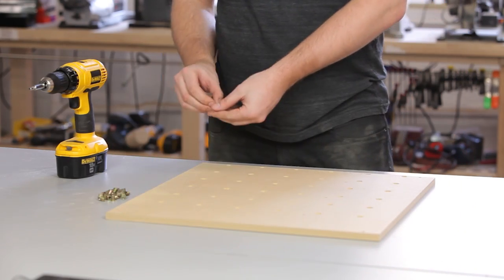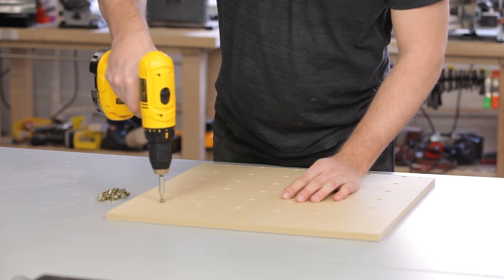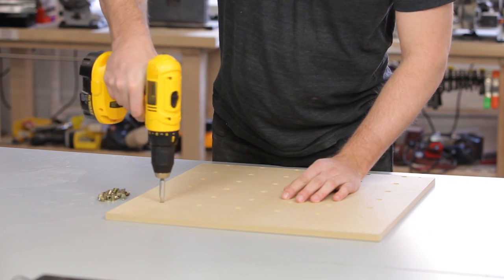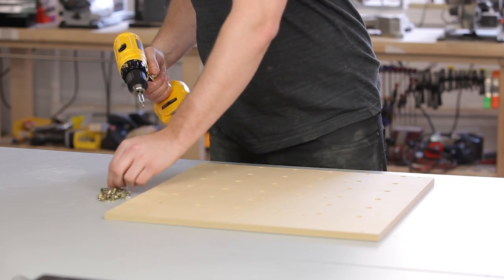Now we're going to put threaded inserts into the waste board. Same as before, keep the drill vertical while you do this and make sure that the threaded insert is sub-flush or flush with the waste board.